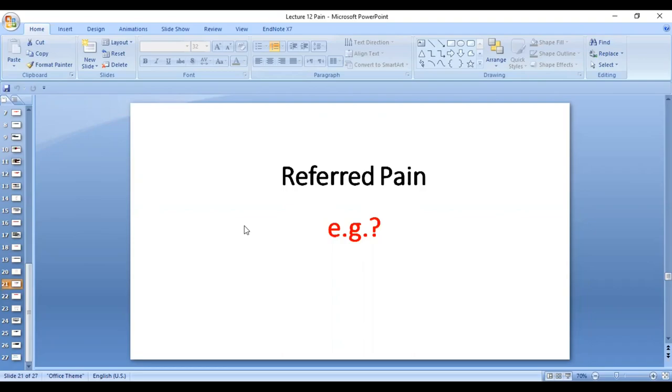Another example is cholecystitis. Cholecystitis pain is referred to the shoulder, to the tip of the scapula. Appendicitis pain is referred to the umbilical area.